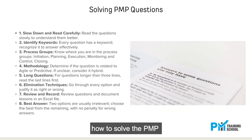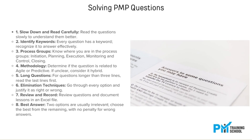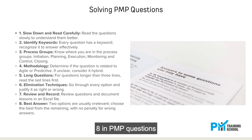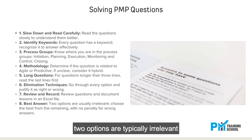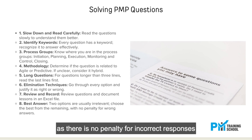How to solve PMP questions: 1. Slow down and read the questions slowly so you can understand them better. In PMP questions, two options are typically irrelevant and two are close to being correct. Always select the best answer, as there is no penalty for incorrect responses.